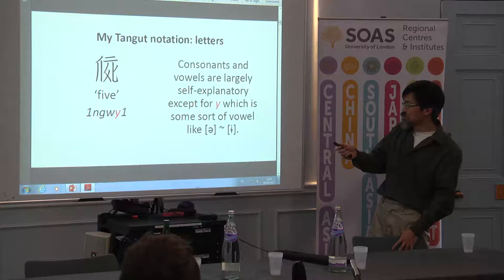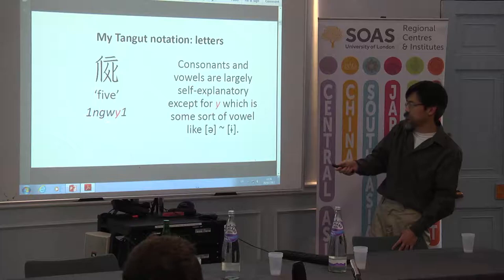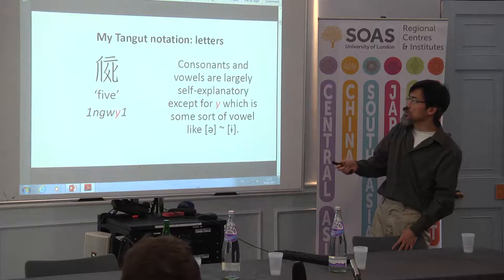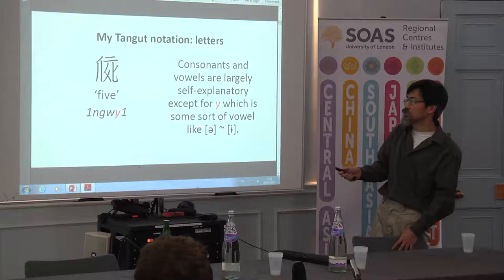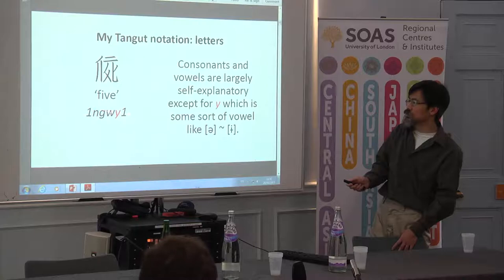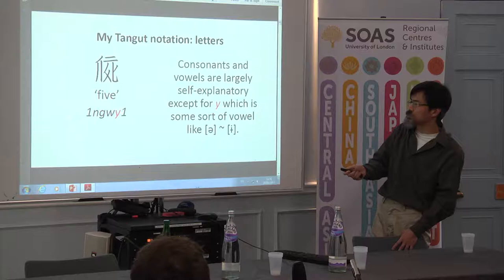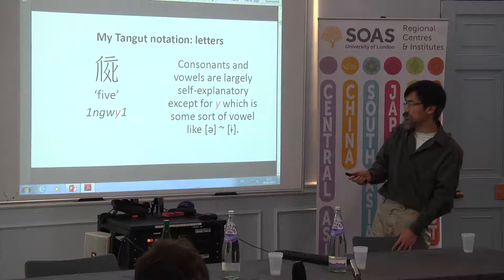The middle of the syllable in my system is fairly self-explanatory — it's the consonants and vowels of the syllable. The one exception is that I use the letter Y to represent some sort of central vowel. It's a deliberately noncommittal symbol. My transcription is not intended as phonetic notation; it's somewhat abstract. I use numbers for the tones because I am noncommittal about how tones sounded, and I use Y because all I know about it for sure is that it's some sort of central vowel.